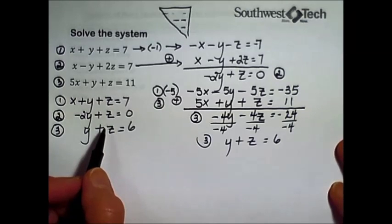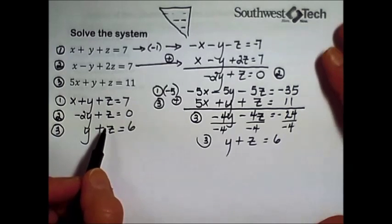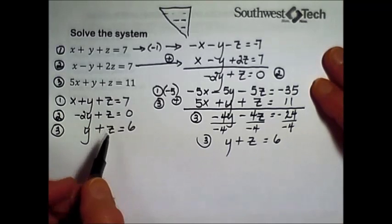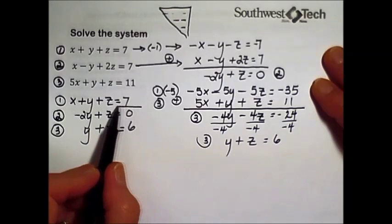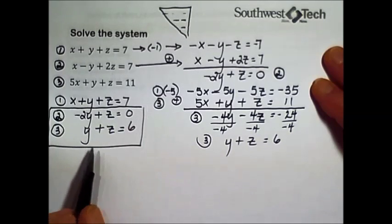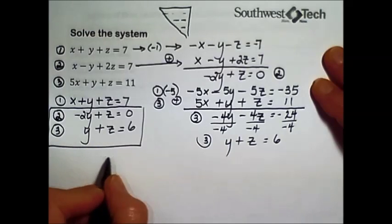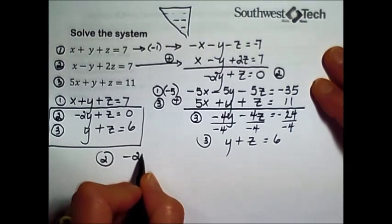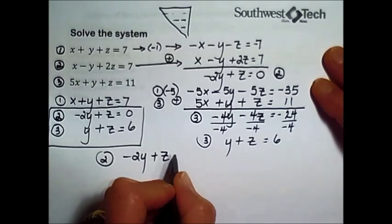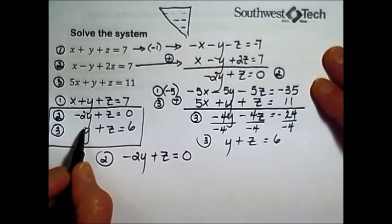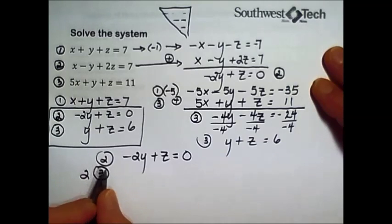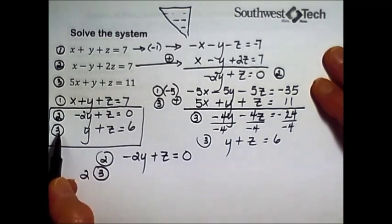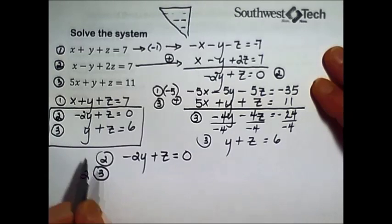You want to be very neat and organized. Watch your arithmetic because that will catch you more times than anything else. The goal right now is I'm only working with these two equations. I'll leave equation number two as is, negative two y plus z equals zero. The third equation, multiply it by two.